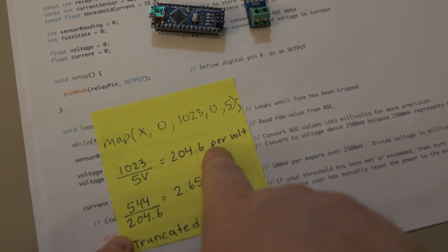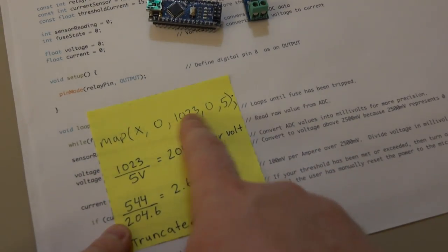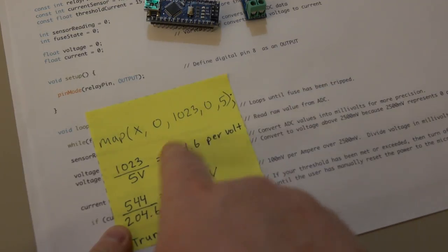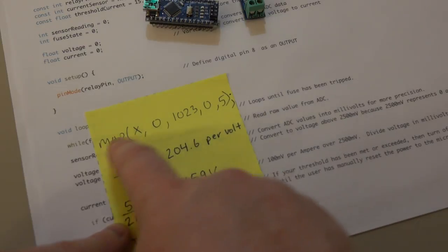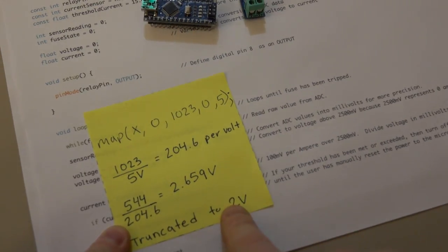So it would basically come out to 204.6 per volt. So let's assume the reading from the analog to digital converter was 544. So in reality, that would be 2.659 volts. But the math is integer math. So what we end up with is 2 volts.